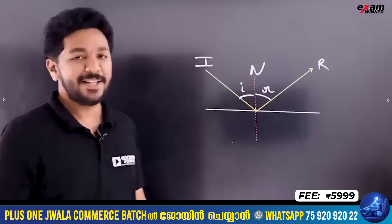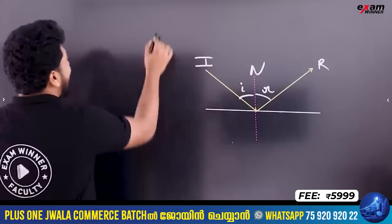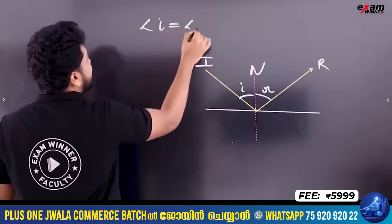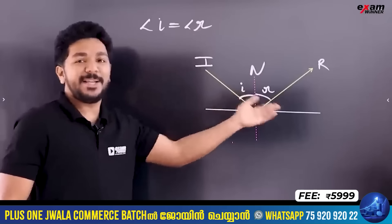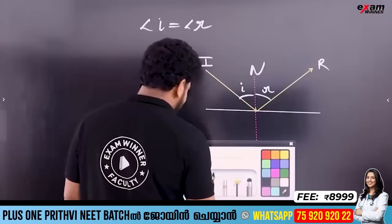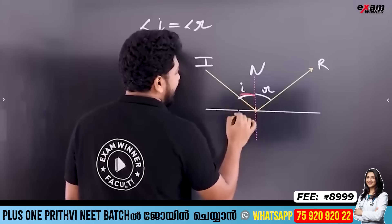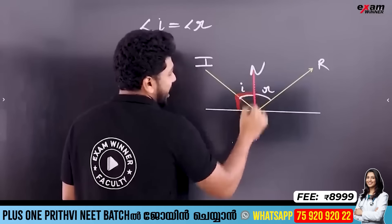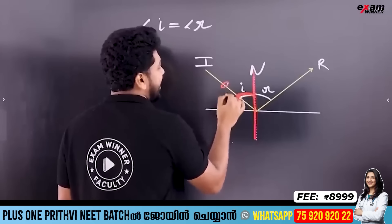The reflected ray forms the angle of reflection, which is R. I want to show here that I and R — the angle of incidence and angle of reflection — are the same. This is not a 90 degree perpendicular angle; the normal itself is at 90 degrees to the surface.